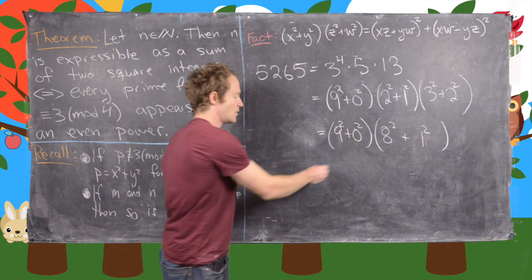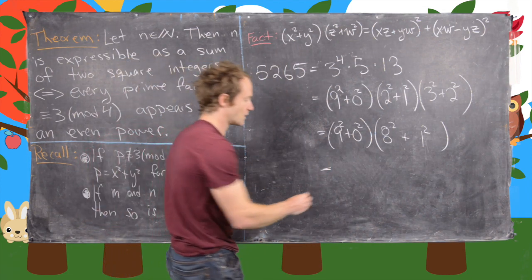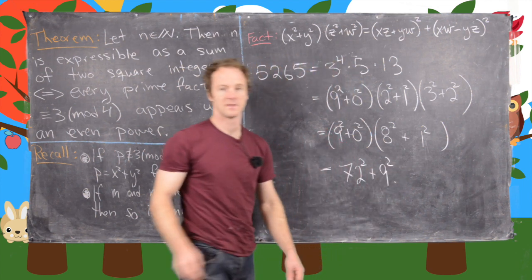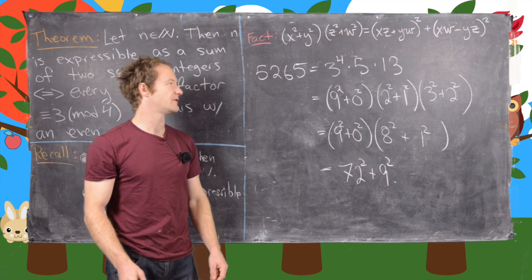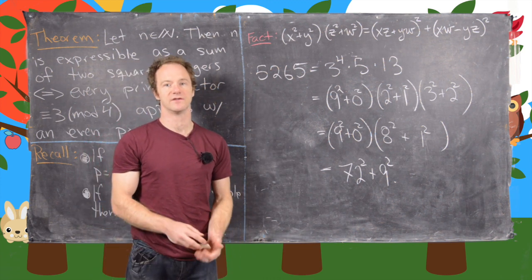And now finally, we can use this formula one more time on this pairing. And we'll get this is 72 squared plus 9 squared. And that's the way to express 5265 as the sum of 2 squares. Okay, good. This is the end of the video.